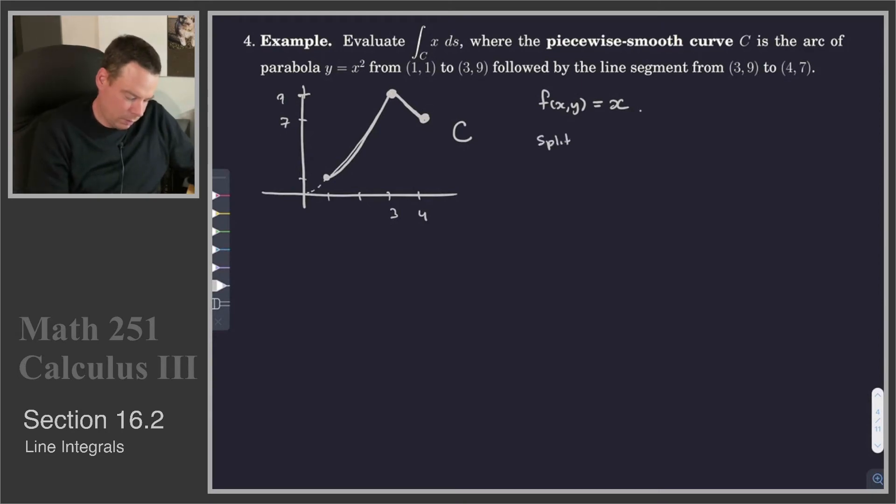So what is C? Well, we'll split C into two curves, because then we can just find the integral over each of the curves and then add them up. So the first curve C₁, which is this one here, that's a parabola. So that is x=t, y=t², and t is going to range over the values from 1 to 3.